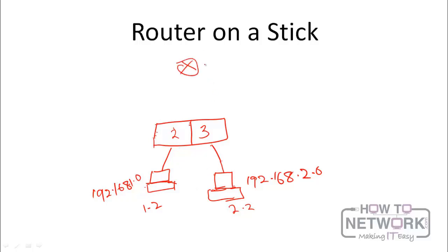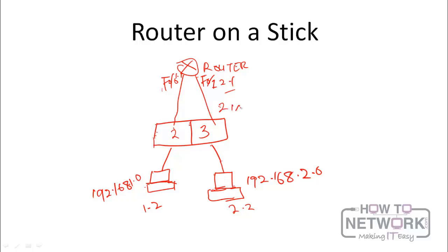We do that with a router. One way is to plug two interfaces of the router into each of the VLANs — say fast Ethernet 0/0 and fast Ethernet 0/1 — and configure them with IP addresses 192.168.1.1 and 192.168.2.1. The router will then route packets between networks. However, this requires two interfaces and wastes two switch ports, which is not very efficient.